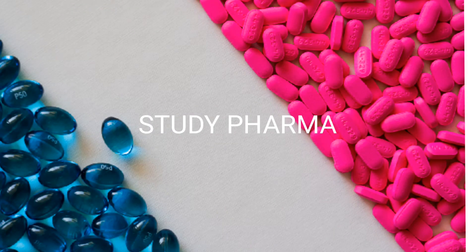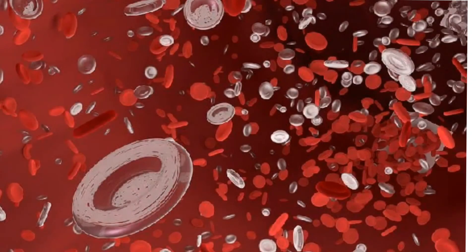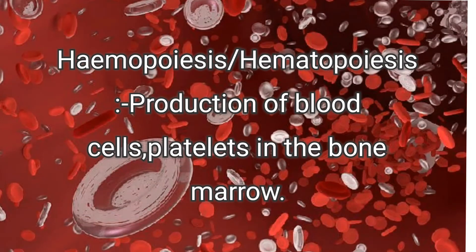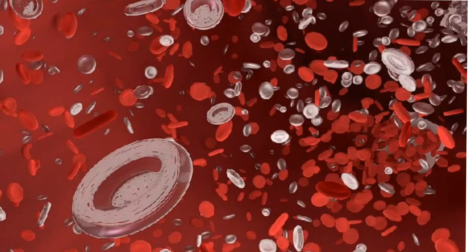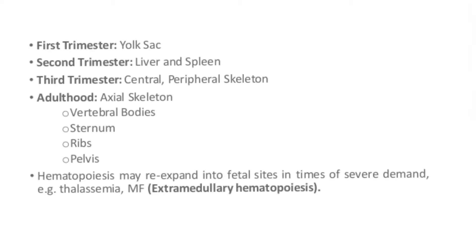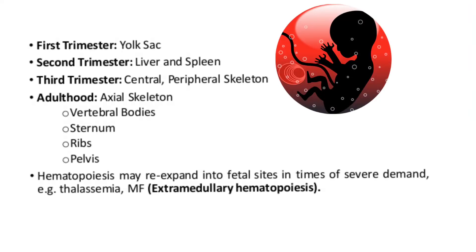In today's lecture we're going to discuss hemopoiesis, or hematopoiesis — the production of blood cells: RBCs, WBCs, and even platelets. This occurs in the bone marrow, and this process is called hemopoiesis.